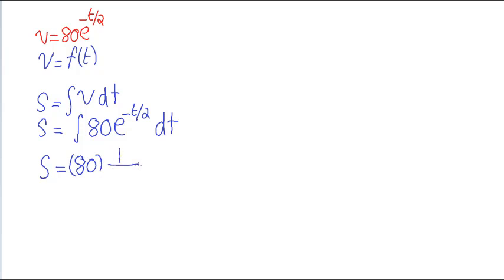But we have 1 over the coefficient of the t. The coefficient of the t, the number next to the t is minus a half. So, we have minus a half, then E stays the same, E to the minus t over 2 plus C, constant of integration. Then we say, okay, let's simplify this expression here. So, S will equal to, the 2 will go to the top, the minus goes there as well. So, minus 160, E to the minus t over 2 plus C.